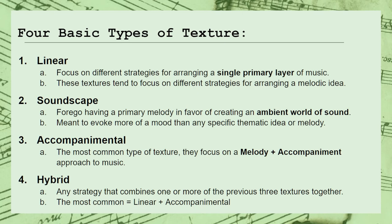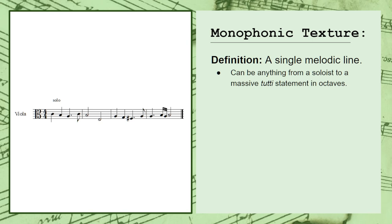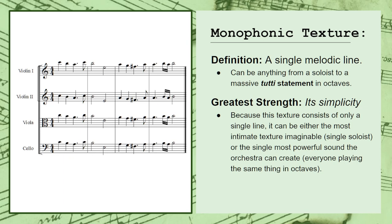We will eventually tackle each of these four categories, but for now, in this video, we're going to focus on just the linear textures. The first of which is something called the monophonic texture. The monophonic texture is by far the simplest option available for orchestrating melodies. It consists of a single melodic line — and that's it. The single greatest strength for this texture is its simplicity. Because it consists of only a single line, it can be used as either the most intimate texture imaginable — a single soloist — or as the single most powerful sound the orchestra is capable of producing: the entire orchestra working together to perform the melody in octaves.